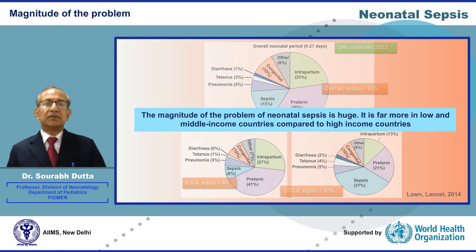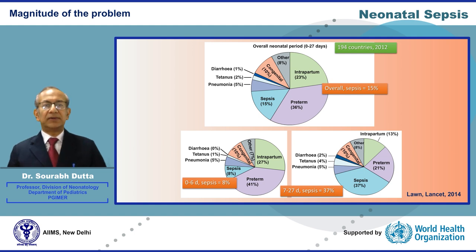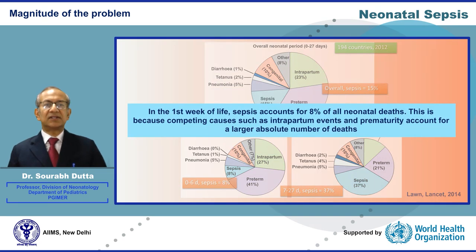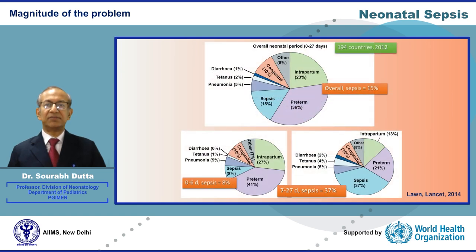The magnitude of the problem of Neonatal Sepsis is huge, far more in low and middle income countries compared to high income countries. This graph from a systematic review of data from 194 countries shows that overall 15% of all neonatal deaths can be attributed to Sepsis. In the first week of life, Sepsis accounts for 8% of all neonatal deaths, because competing causes such as intrapartum events and prematurity account for a larger absolute number of deaths. After the first week, however, Sepsis is the dominant cause of neonatal mortality, accounting for as many as 37% of all deaths.